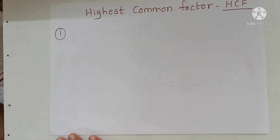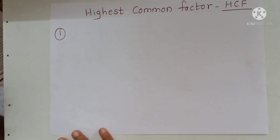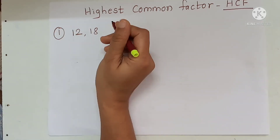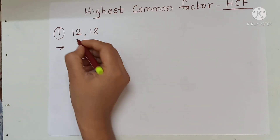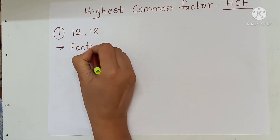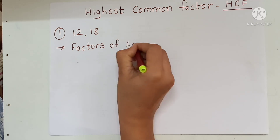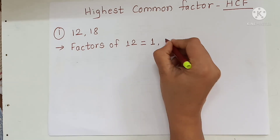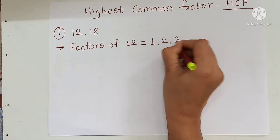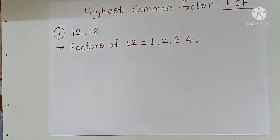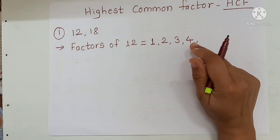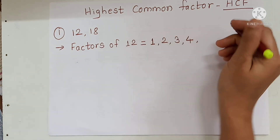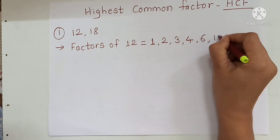First example: 12 and 18. First of all we have to write factors of 12. So factors of 12 are 1, 2, 3, 4. We have to use the divisibility test here to find out the factors of the given number. Next numbers are 6 and last number 12.